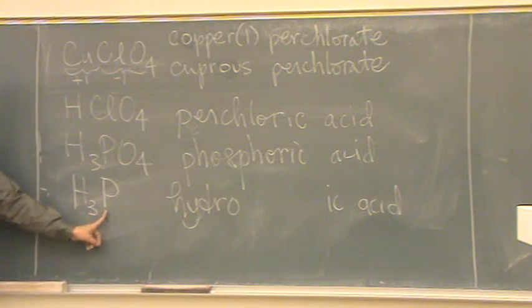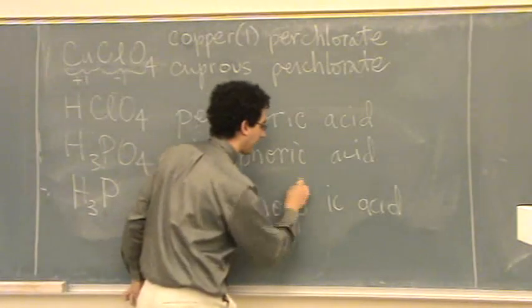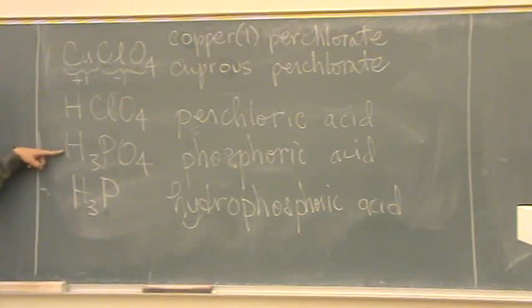So this case, we'll put the base name, phosphoric, or phosphor. So this is hydrophosphoric acid, this is phosphoric acid. The hydro indicates it's a binary.